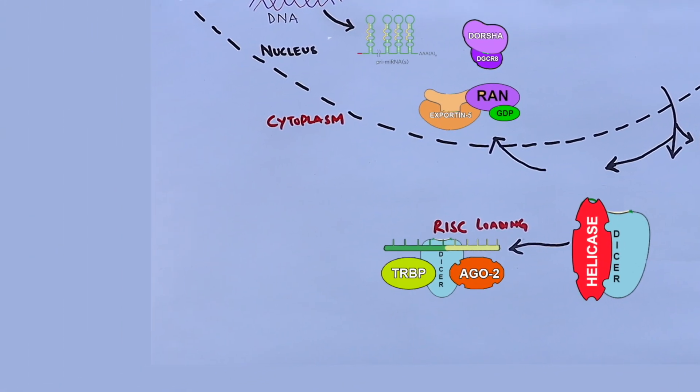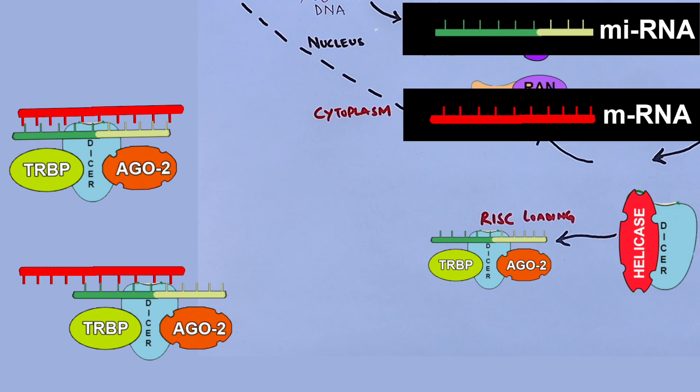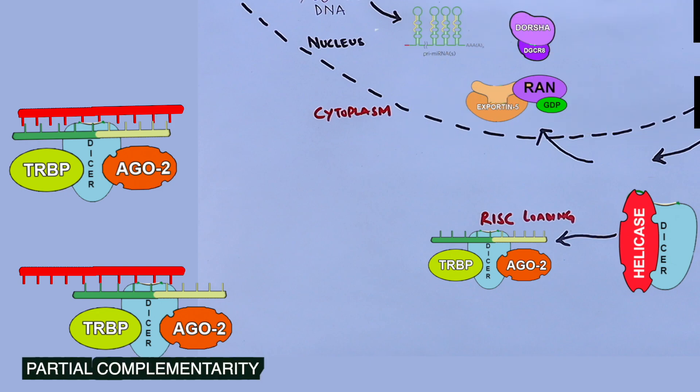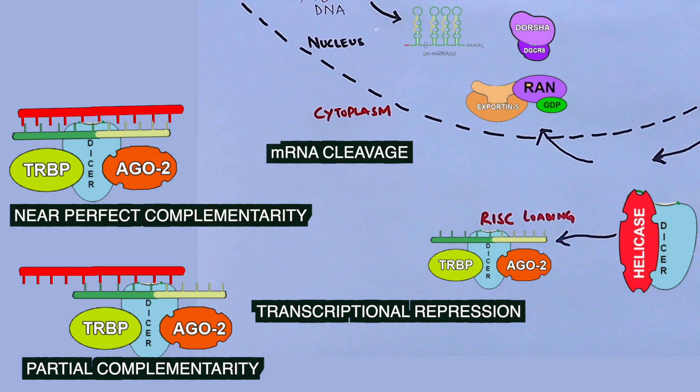After RISC loading, the miRNA is targeted to mRNA. If there is partial complementarity, we get transcriptional repression. Whereas if we get near perfect complementarity, we get cleavage of mRNA.